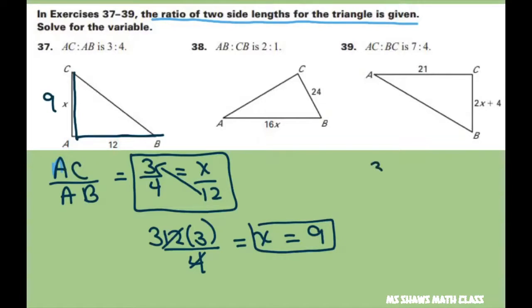So basically it's saying 3 fourths is 9 twelfths, which you can see. You just multiply both the numerator and the denominator by 3 and you get that. All right, so let's move on.